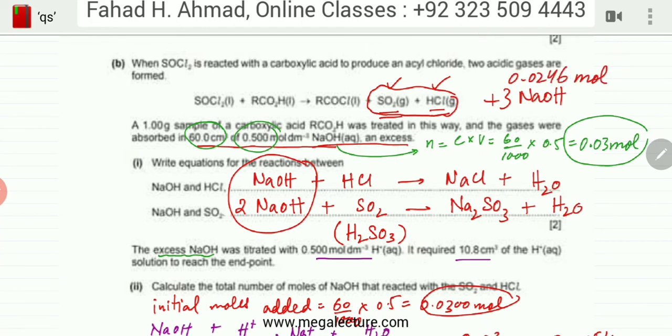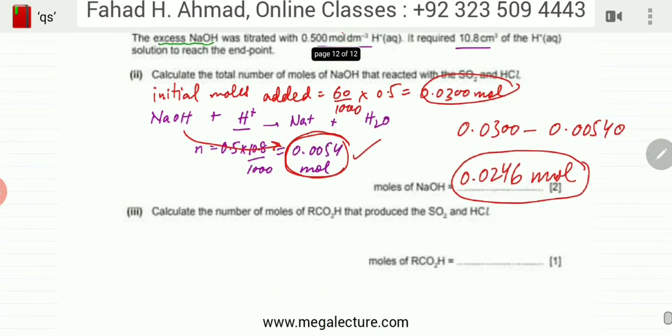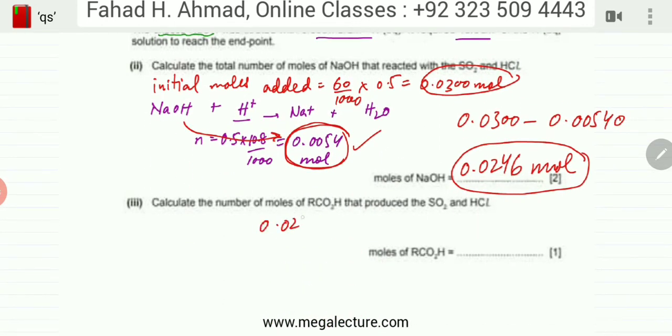I'm going to use this ratio because I know that SO2 and HCl together react with three moles of NaOH. I can figure out the moles of HCl would be three times less, and the moles of carboxylic acid would also be three times less. Using ratios: 0.0246 moles divided by 3 gives me 0.0082 moles. That's the moles of carboxylic acid taking part in the reaction.